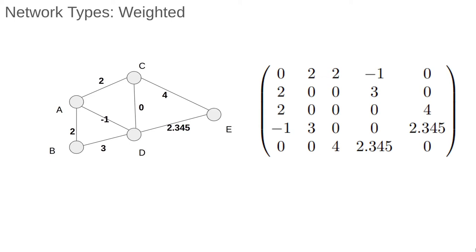For a directed weighted network, instead of a negative weight, we would usually reverse the direction of the arrow, so a negative flow from A to B would actually be a positive flow from B to A.